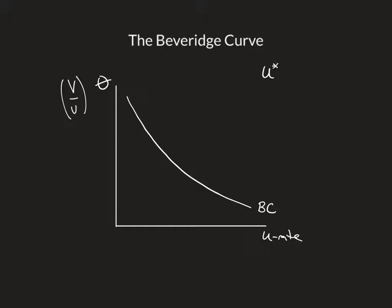Remember we get this by the thing we just solved for. We solved for that u-star as a function of theta, and we said it was s over s plus f as a function of theta.